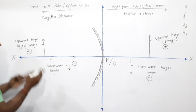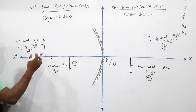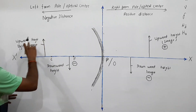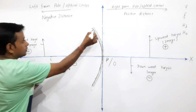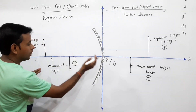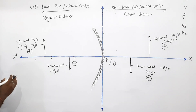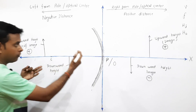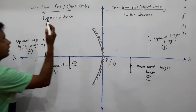When any object is placed in front of a mirror or a lens, its height is always upward and is taken as positive. The distance of the object from the pole of the mirror or optical center of the lens is always negative, because the object is on the left side of the pole — just as in the case of the graph, any left-side distance is negative.